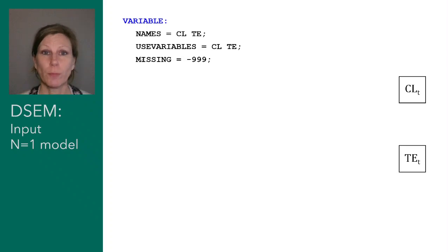In the missing option, we indicate which code was used for the missing values, in this case minus 999.